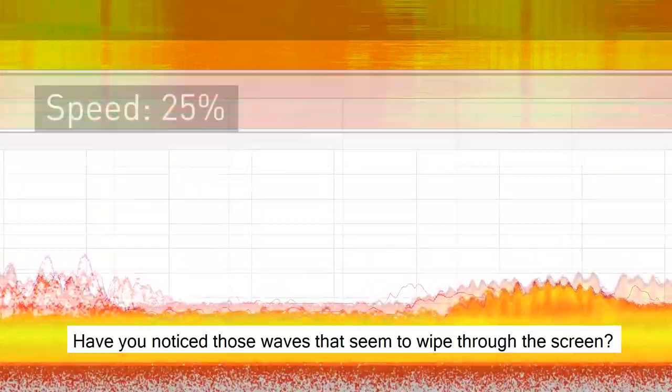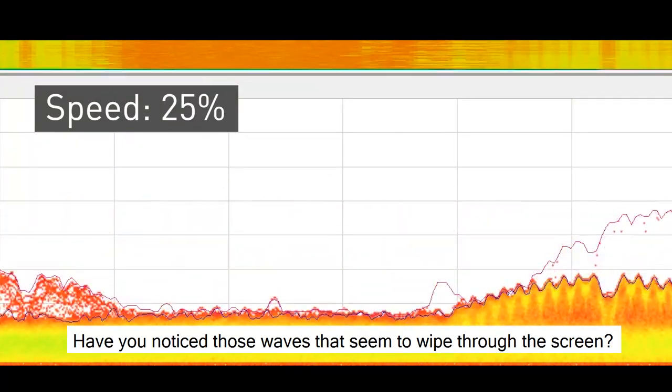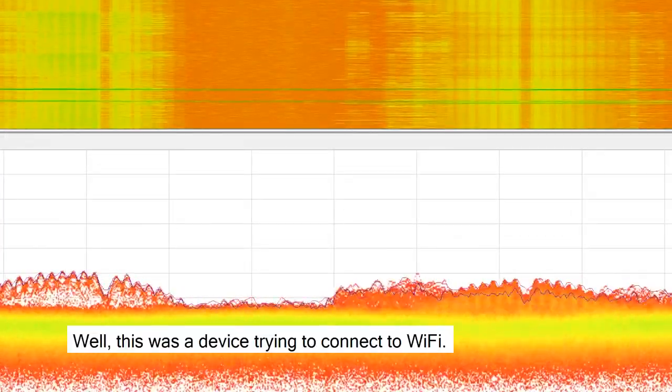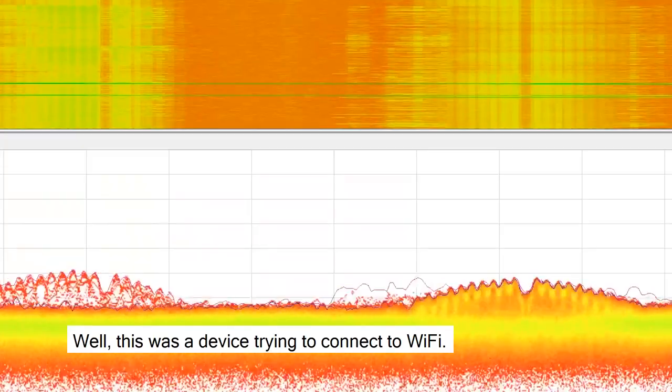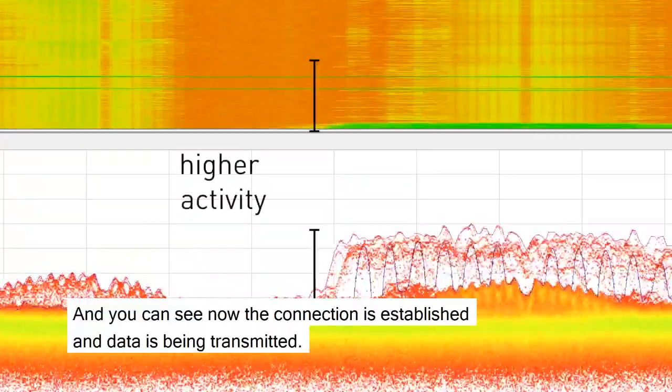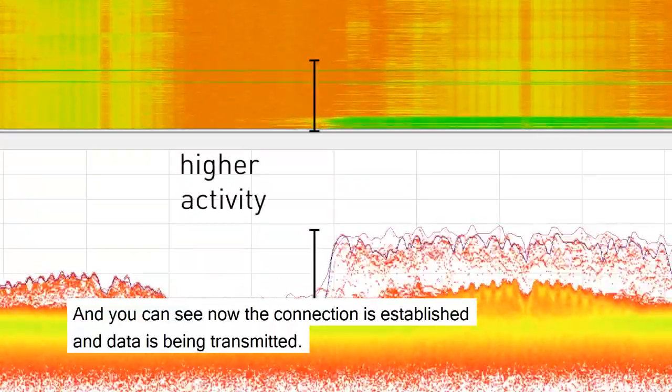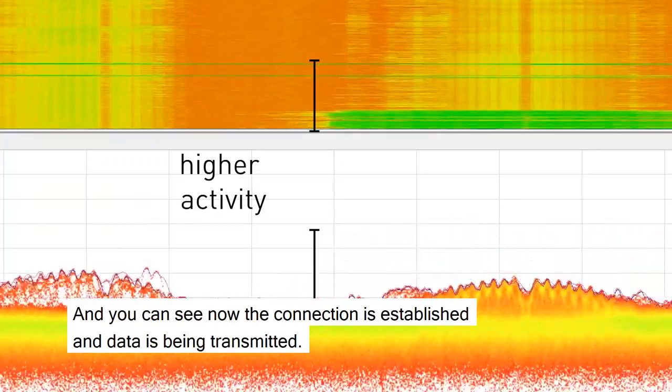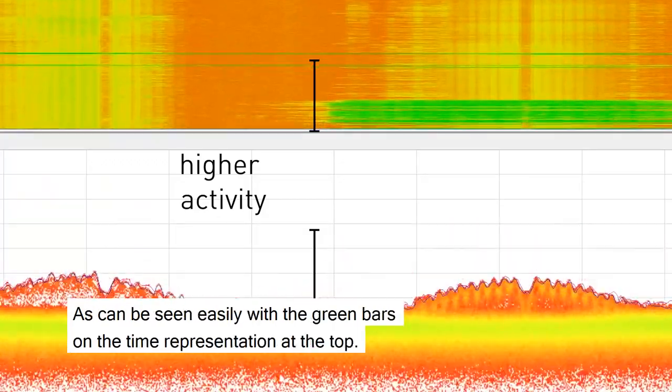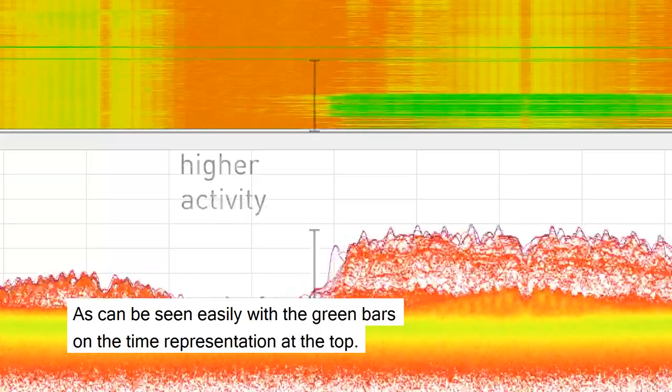Have you noticed those waves that seem to wipe through the screen? Well, this was a device trying to connect to Wi-Fi. And see now, the connection is established and data is being transmitted, as can be seen easily with the green bars on the time representation at the top.